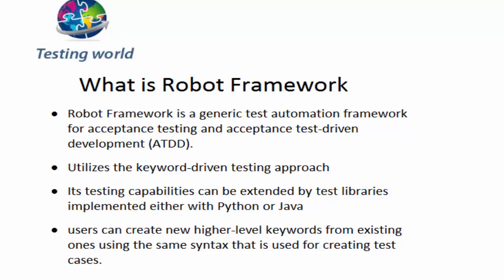Normally acceptance testing is done by the client or the BA professional, and they do not have any automation tool understanding. So in most cases they do it manually. But Robot Framework provides the functionality to automate acceptance testing even without any programming knowledge. Most tasks in Robot Framework can be done without writing any code.